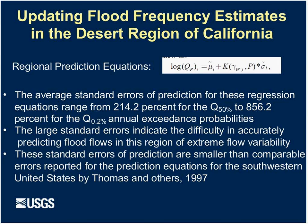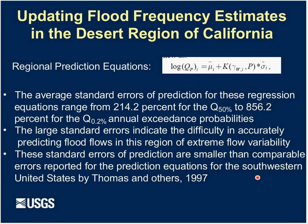We developed regional prediction equations for ungauged basins in the desert. In the spirit of the log Pearson Type 3 distribution, the equations combine the regional skew in the K term, the regional standard deviation, and the regional mean together. The prediction equations in the desert are a function of drainage area. The average standard errors of prediction for these regression equations range from 214% all the way up to 856% for the 500-year event. These high standard errors reflect the difficulty of predicting flows in this region of notoriously extreme variability, though these standard errors are actually relatively low given the challenges.